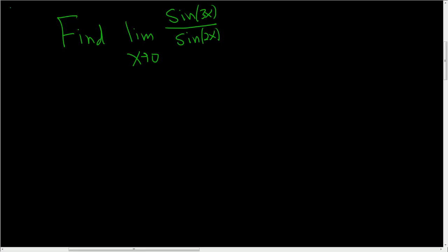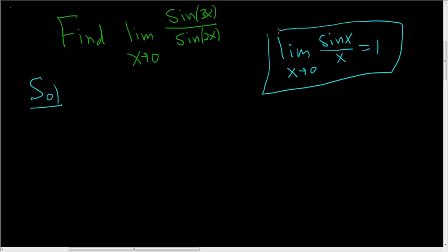We're asked to find the limit of sin(3x) over sin(2x) as x approaches zero. There is another limit that we will use in this problem. If you look at the limit as x approaches zero of sin(x) over x, that's equal to 1. This is what we are going to use.